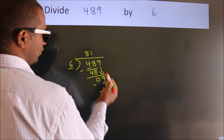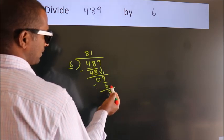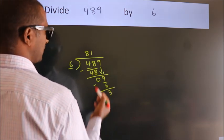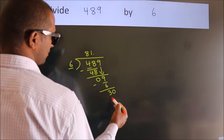After this, no more numbers to bring down. So what we do is put a dot and take zero.